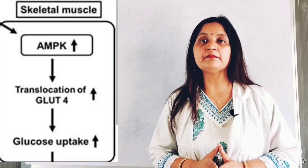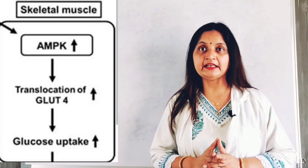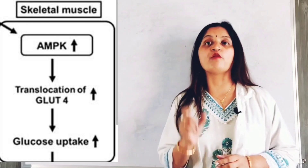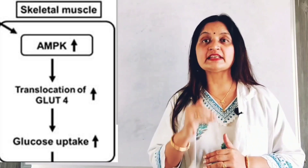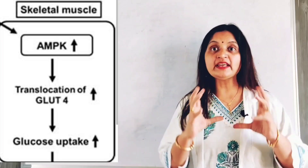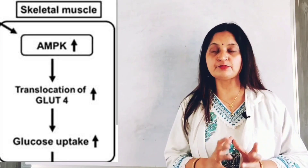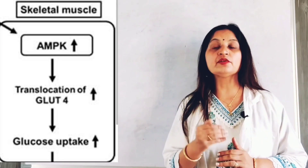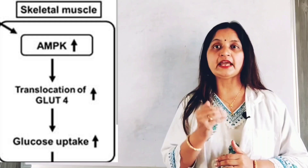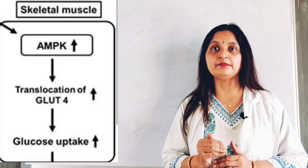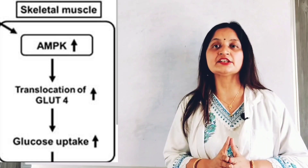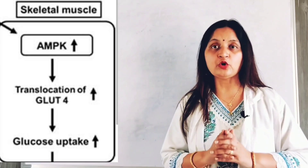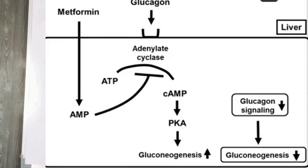Thirdly, in skeletal muscle, activated AMPK causes translocation of GLUT4 transporters to the surface of the skeletal muscle. The increased expression of GLUT4 transporters in skeletal muscle and adipose tissue increases glucose uptake and helps in glucose utilization through the process of glycolysis, thereby reducing blood glucose levels.